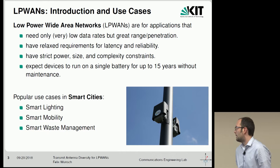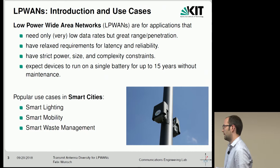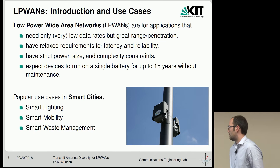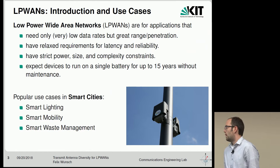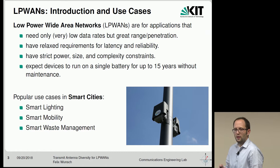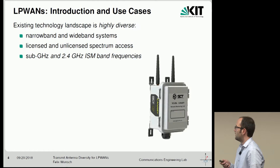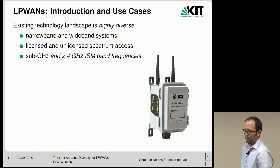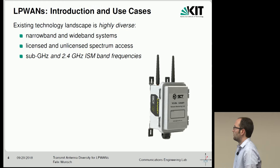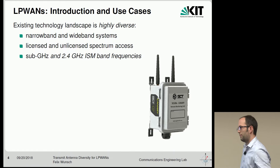The most popular use case is probably everything connected to smart cities, such as smart lighting — smart street lamps or street poles that potentially also have environmental sensors — smart mobility like traffic monitoring, parking spot monitoring, or monitoring the fill status of intelligent public trash bins to optimize garbage collection routes. IoT and smart cities have been a hot topic, and several commercial manufacturers have now pushed their solutions onto the market.